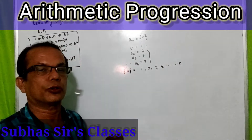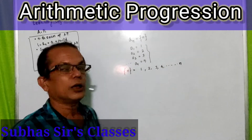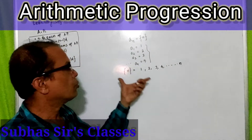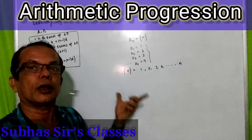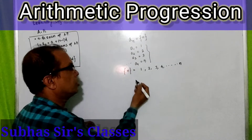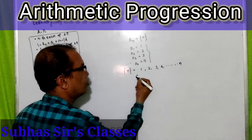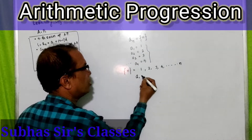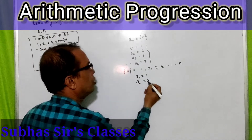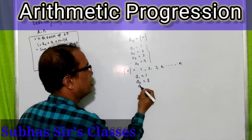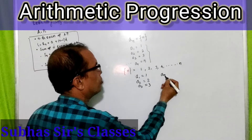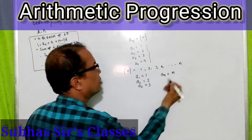We have already discussed this in our earlier classes. Now we are going to find the nth term of a sequence. Since the first term a1 is 1, a2 is 2, and a3 is 3, what would be the nth term? The nth term is n.